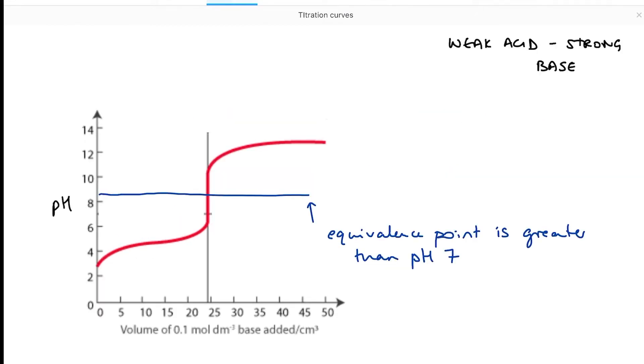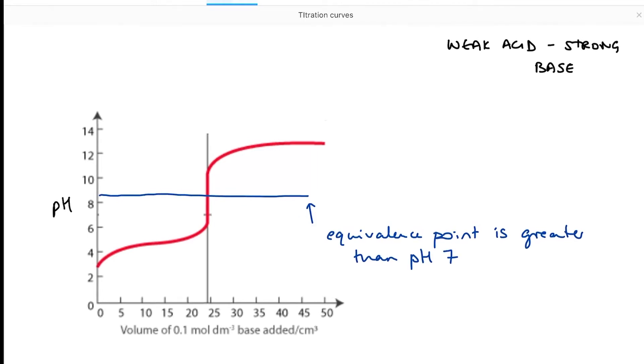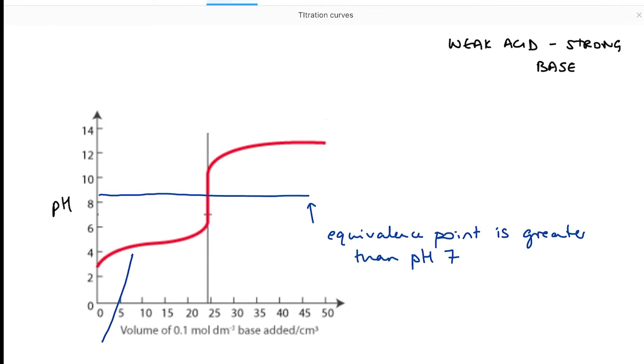So let's look at how the curve changes when we are titrating a weak acid and a strong base. The first thing to note is the equivalence point is greater than pH seven. I'll explain that in a second. The next thing I would like to draw your attention to is the first part of the curve.